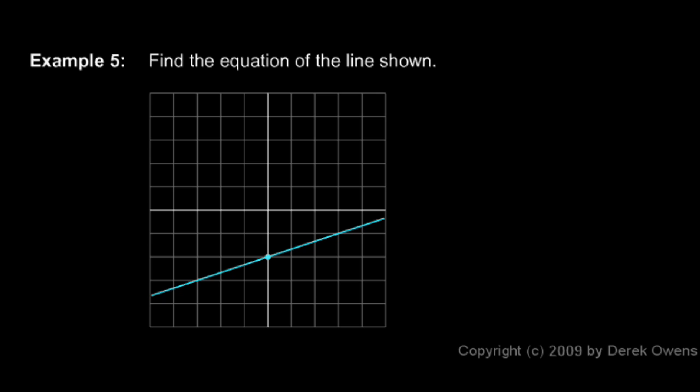Here's another example. We need to find the equation of the line shown. Again, we'll get values for the slope and the y-intercept.